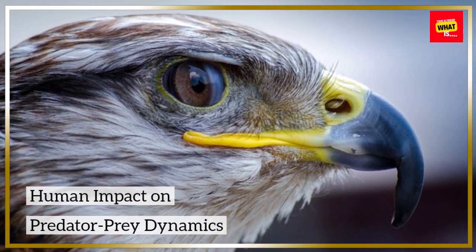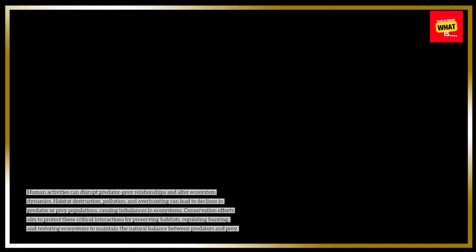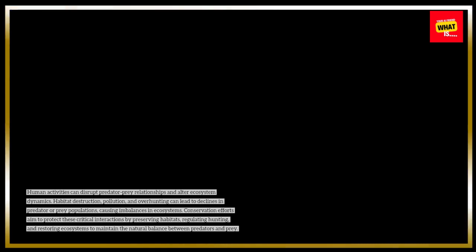Human Impact on Predator-Prey Dynamics. Human activities can disrupt predator-prey relationships and alter ecosystem dynamics. Habitat destruction, pollution, and overhunting can lead to declines in predator or prey populations, causing imbalances in ecosystems. Conservation efforts aim to protect these critical interactions by preserving habitats, regulating hunting, and restoring ecosystems to maintain the natural balance between predators and prey.